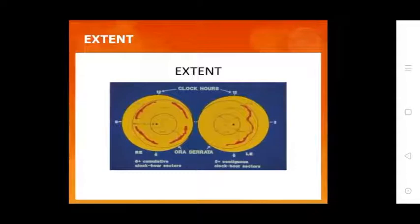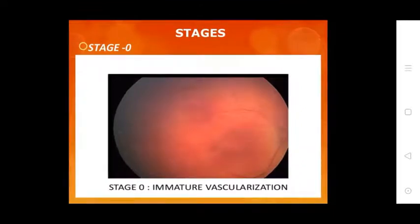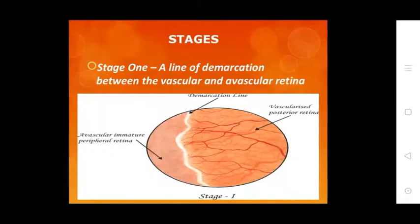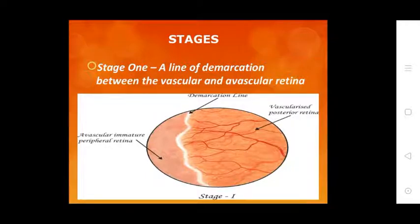Stage 0 is immature vascularization. Stage 1 involves growth of vessels with a mildly defined demarcation line between the avascular peripheral retina and the vascular posterior retina. This demarcation line and vascular posterior retina at Stage 1 conditions are shown in the diagram.